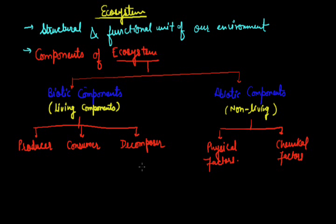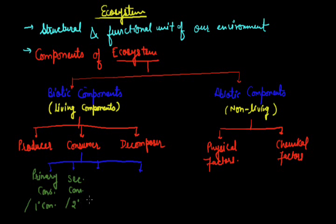Here we can classify these organisms into various kinds again. Consumer can categorize as primary, secondary, tertiary and top consumer. Primary consumer is also known as one degree consumer, another one is secondary consumer, that is also known as two degree consumer.